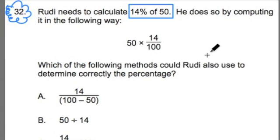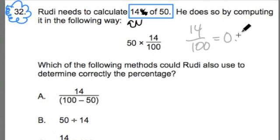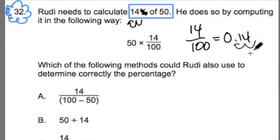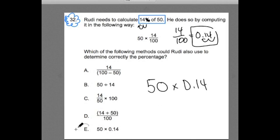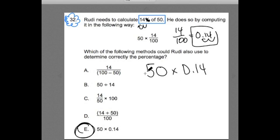There's a second way of finding the percent of a number: turn the percent into a decimal. We do that by crossing out the percent sign and moving the decimal two spaces to the left. Remember, 14% is 14 hundredths, or 0.14. All I did was drop the percent sign and move the decimal over two spaces to get the decimal representation of 14%. So now we have 50 times 0.14 — and that's the answer, choice E. It's really important to also practice multiplication with decimals.